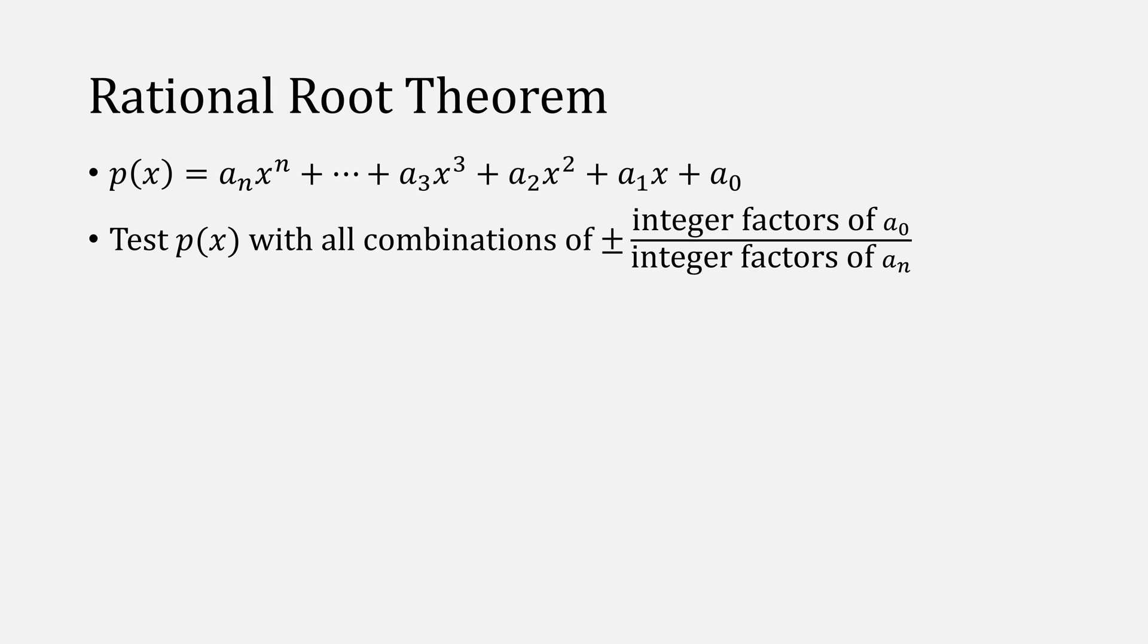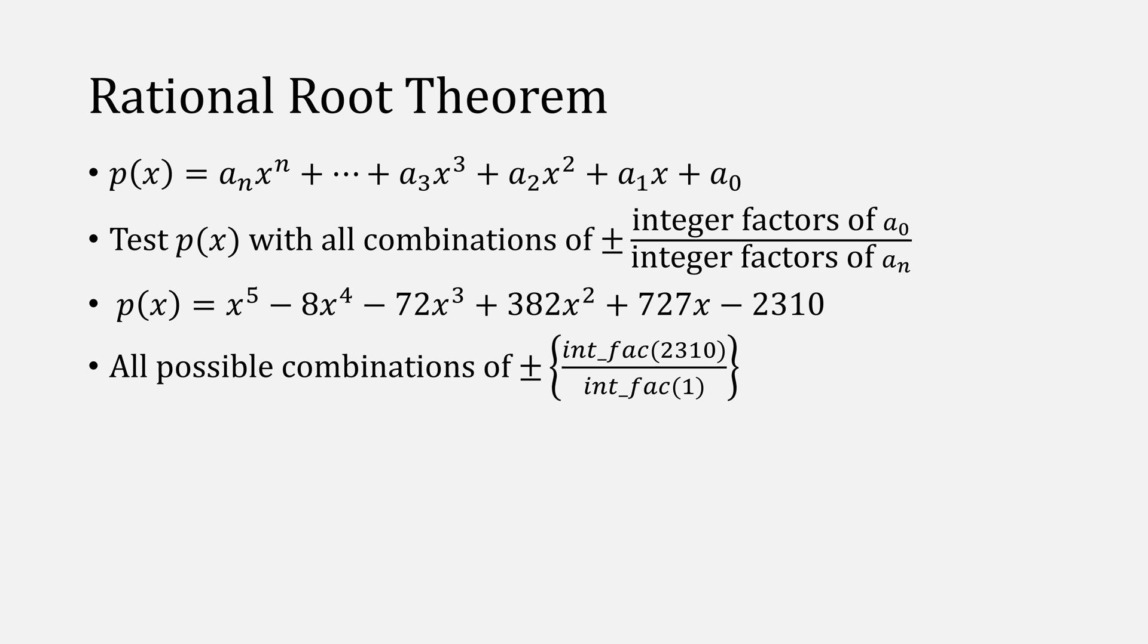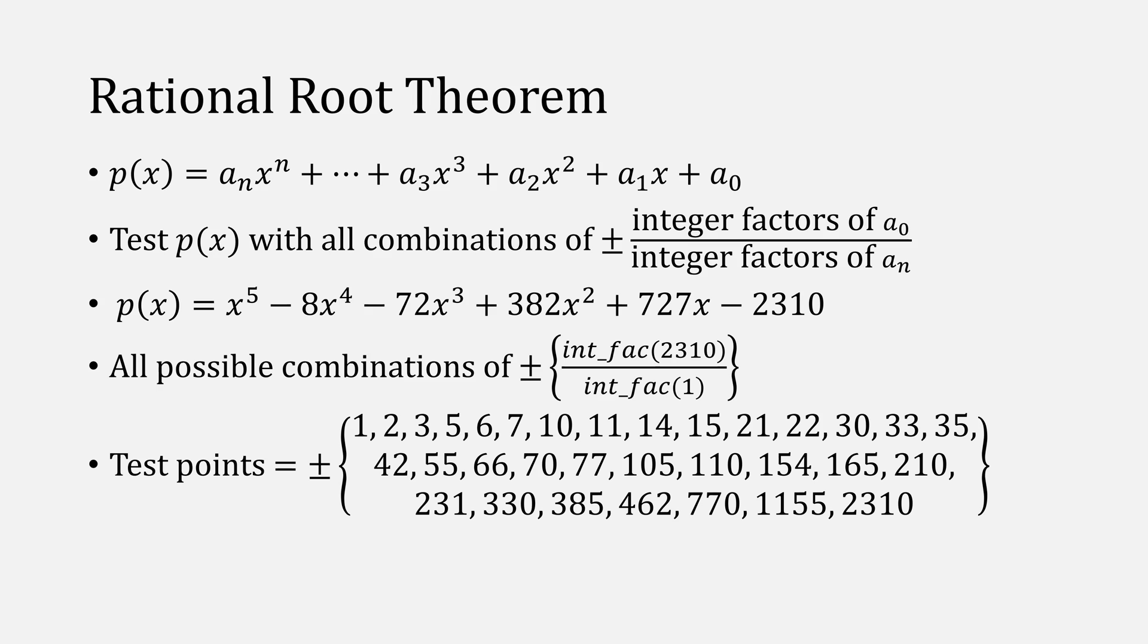We could instead use the rational root theorem, which says, given a polynomial, we test that polynomial at every combination of values of the integer factors of A sub 0 divided by the integer factors of A sub n, both positive and negative. For our example polynomial, this means all the combinations of the integer factors of 2310 divided by the integer factors of 1, which gives us these 64 test points, which actually can find the roots. But as the name implies, this won't work for irrational roots, and the larger your numbers, the more test points you have.